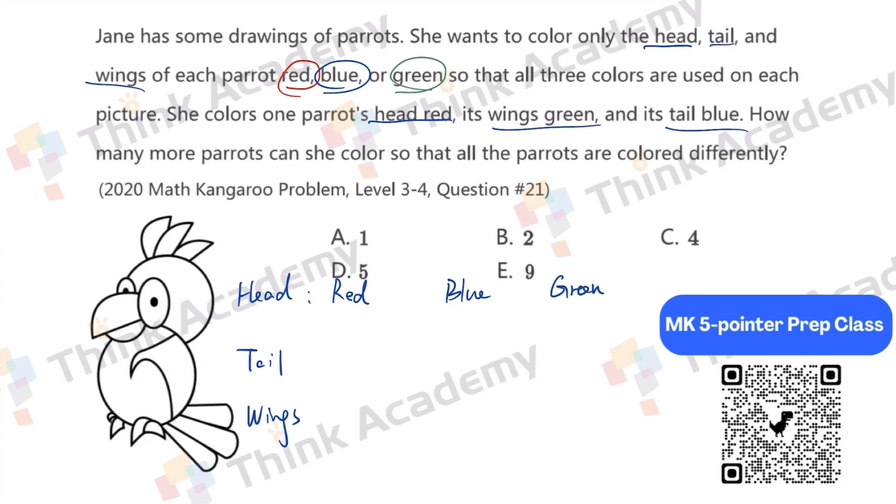If the head is red, then the tail can be blue or green. If the tail is blue, then the wings have to be green. And if it's green, then they are blue.